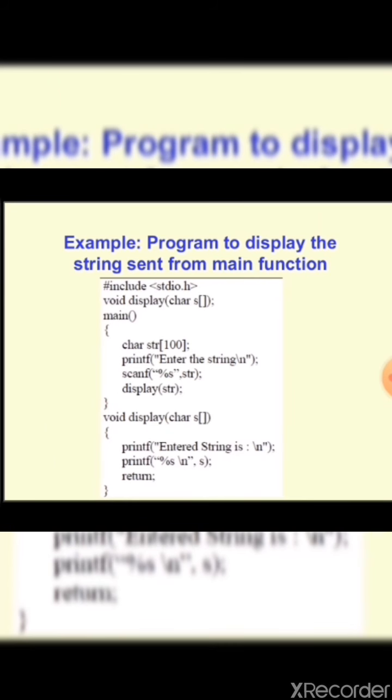In this string example, we ask the user to enter a string, receive it in the str variable, and send it to the display function. Inside display, we receive it and print the value. Notice there is no size parameter here, unlike the previous numeric array example. When sending strings, we don't need the size because the string always ends with '\0', so we know where to stop automatically.